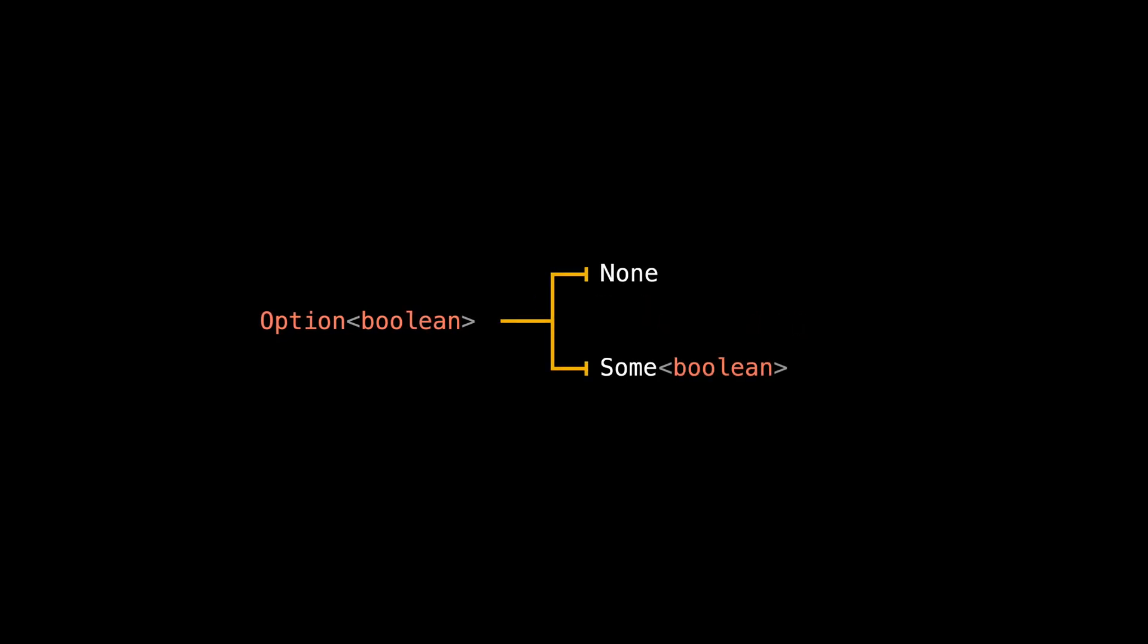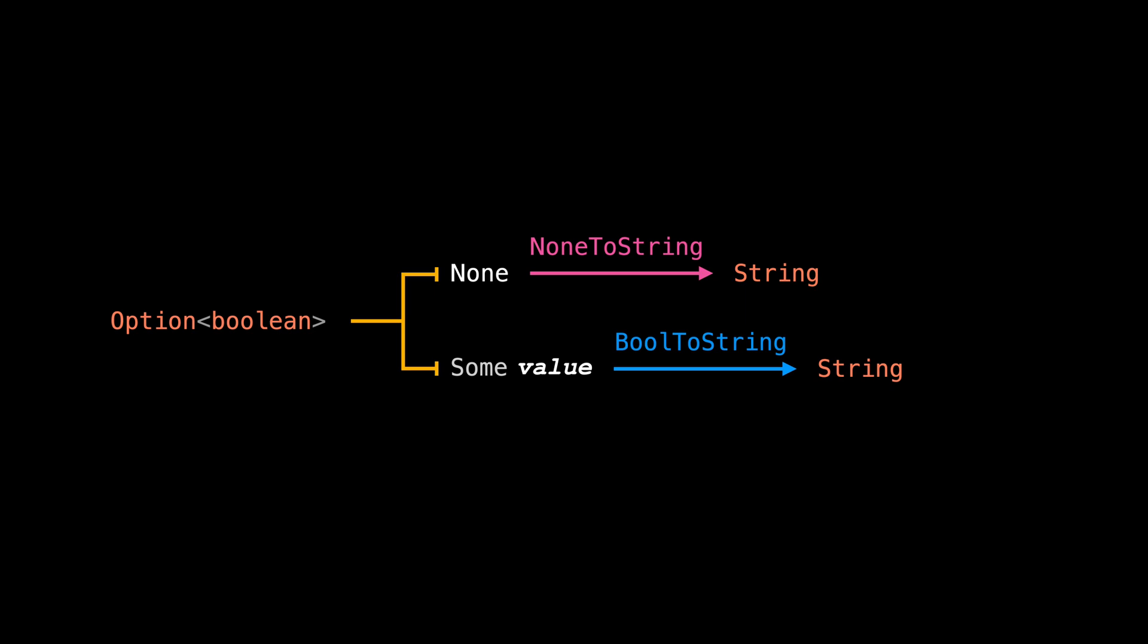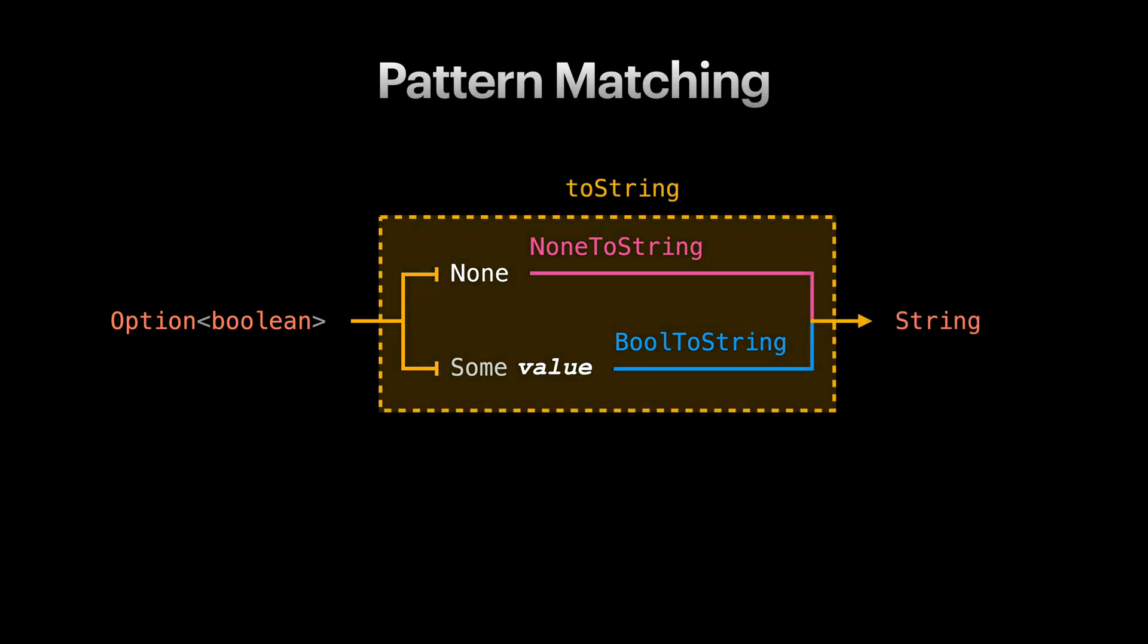So in order to convert an option of boolean to a string, we need to consider each variant. For each variant, we want to extract the data that they hold. For example, here Some is holding a boolean value. After unwrapping our product types in each variant, we need to transform each to a string. Here for None, we have a function that receives None and returns a string. And for Some, we have a function that uses the unwrapped boolean value and transforms it to a string. And that would be the output of our toString function.